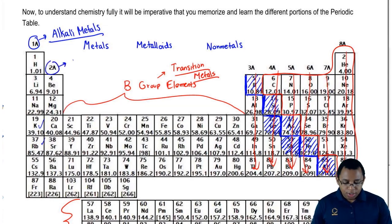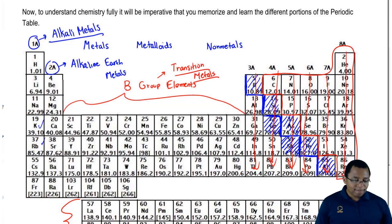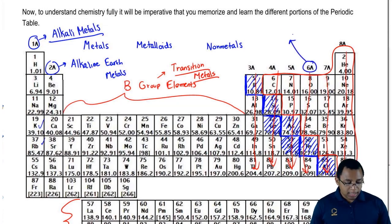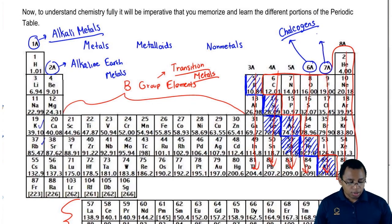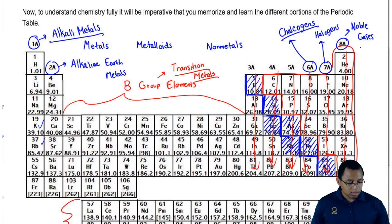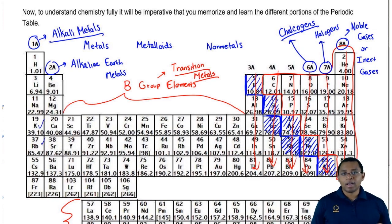Group 2a elements are called your alkaline earth metals. Groups 3a, 4a, and 5a don't have any general names. Group 6a elements are called your chalcogens. Group 7a elements are called your halogens. Group 8a elements are called your noble gases or inert gases. Inert just means they don't react with anything — very unreactive. Alkali metals are super reactive, while inert gases are very unreactive. They're on opposite ends of the periodic table for a reason.